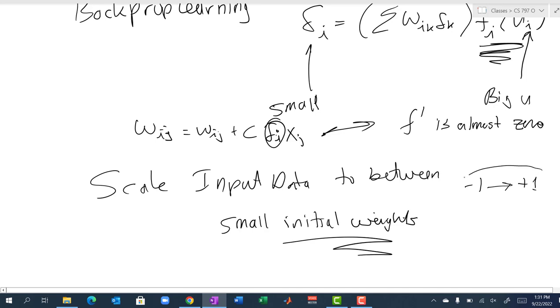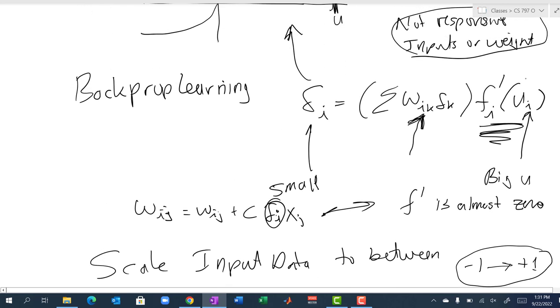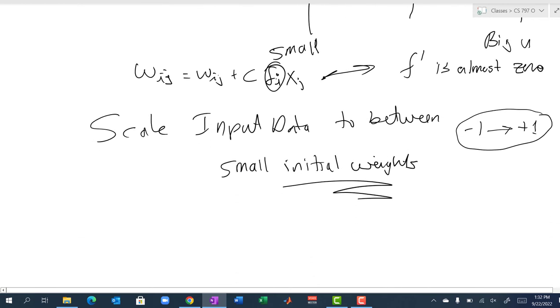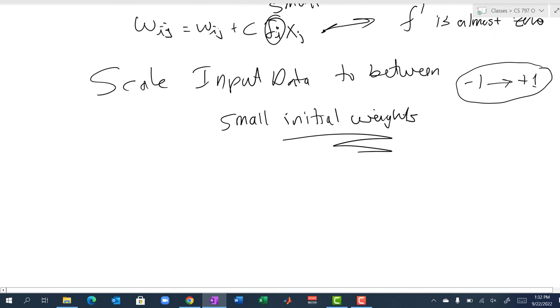What does that do? It means that we've scaled the data so we know we get somewhere between minus one and one. If the weights are all small, the net input going in here is not going to be large, and so the neuron will not be saturated because we have small values coming in for the weights.